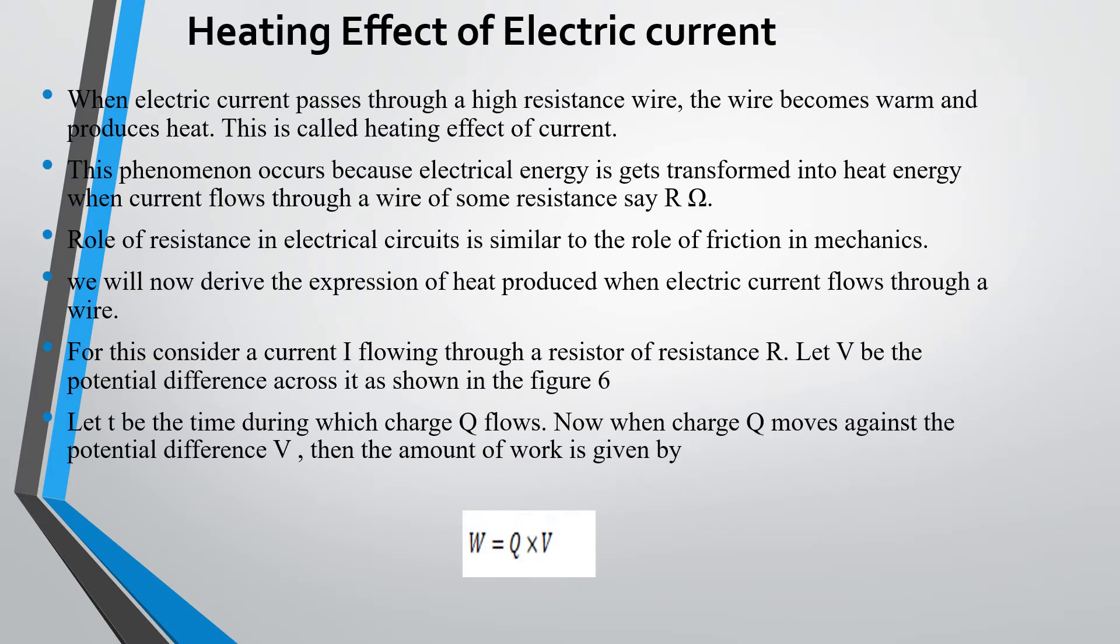Heating effect of electric current. In the case of any conductor, after a moment, if current is moving continuously in it, some effect will produce. Maybe it is a magnetic effect or heating effect. Now we are going to discuss the heating effect of electric current. When a current passes through a high resistance wire, the resistance wire becomes warm and produces heat. This is called heating effect of electric current.